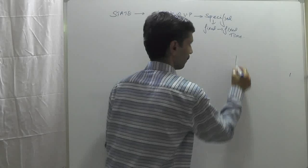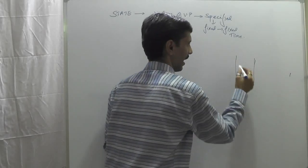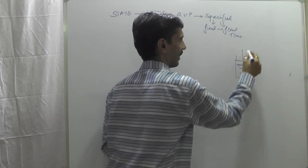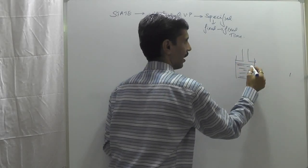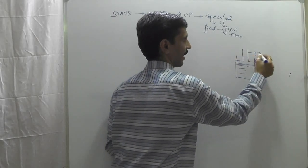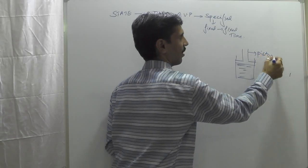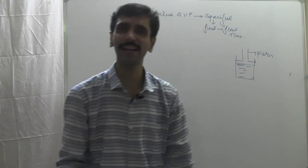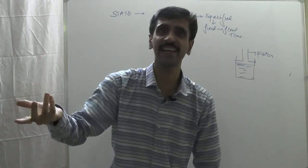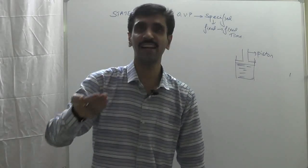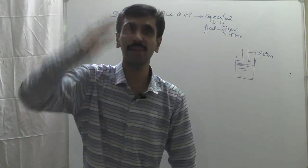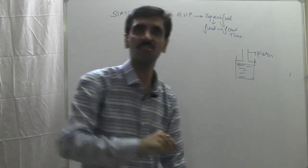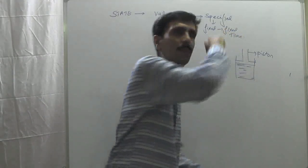For example, I have a beaker. I fill a gas into this, and then I introduce a piston — a weightless and frictionless piston. Weightless means it has no mass. Frictionless means it doesn't have any friction, so it can move very freely up and down depending upon the nature of the gas and the pressure acting on the piston.